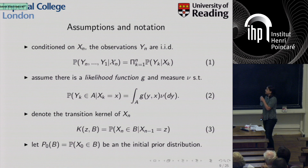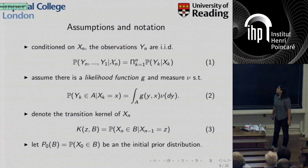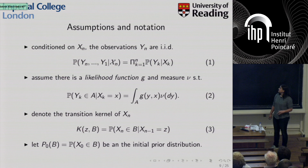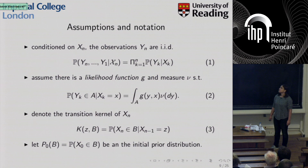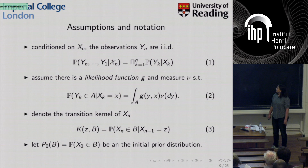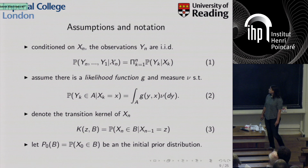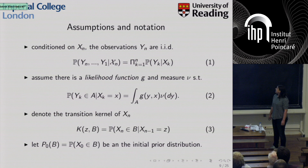Regarding assumptions and notation: we assume a memoryless channel, meaning the observations are independent and identically distributed conditioned on the signal, so the probability of all observations given all signals up to time T_N is just the product of the individual conditional probabilities. We assume a likelihood function g — the density with respect to some measure of the probability of Y given X — and a transition kernel giving the conditional probability of X given the previous state. Finally, we have the initial prior distribution P_0, and it is the sensitivity to this that we wish to explore.